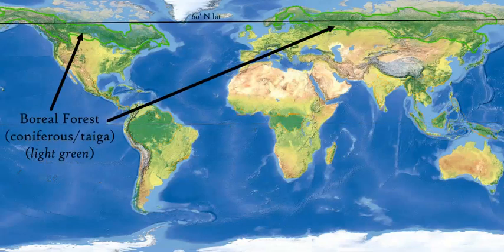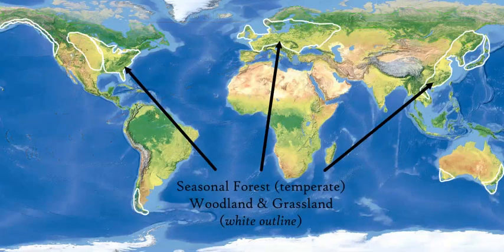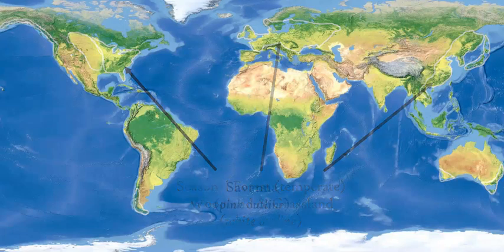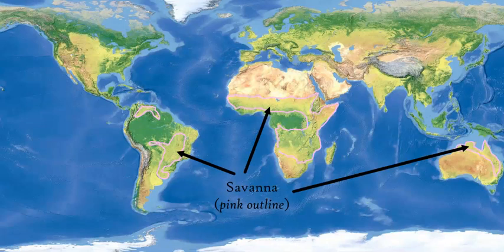Then we have the boreal forests, which are just below the sub-arctic or sub-polar regions of the planet, mostly in the Northern Hemisphere due to the greater amount of land at those latitudes. So the boreal forest, or taiga, then moving down through the different ranges of temperate grasslands, seasonal rainforests and woodlands. Then we have the tropical savannah, which is basically next to the rainforest and before you get into the hot desert regions of the planet.